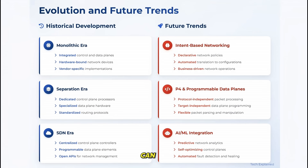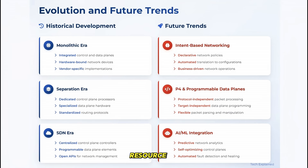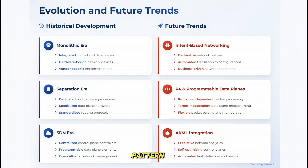Looking to the future, we can expect to see more integration of artificial intelligence and machine learning in both planes. AI could help the control plane make more intelligent decisions about routing and resource allocation, while ML could optimize data plane functions for specific traffic patterns. The separation between data plane and control plane has proven to be a powerful architectural pattern, and it will continue to evolve as networking technology advances.